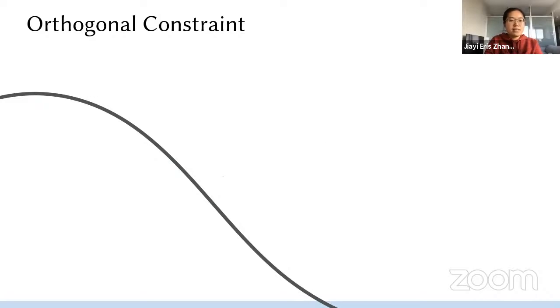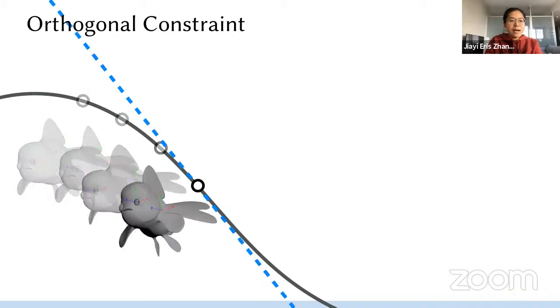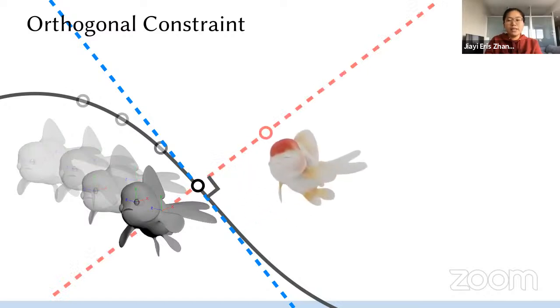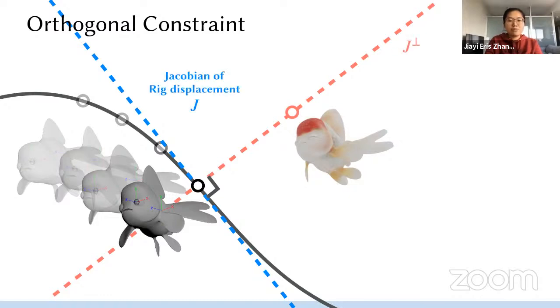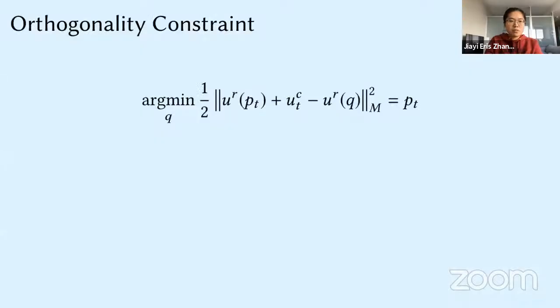Instead, we propose that the rig spans such a large space. At each frame, we compute the local tangent space and restrict the complementary displacement only lies in the space orthogonal to that. Mathematically speaking, this requires us to compute the Jacobian of the rig displacement with respect to the rig parameters.